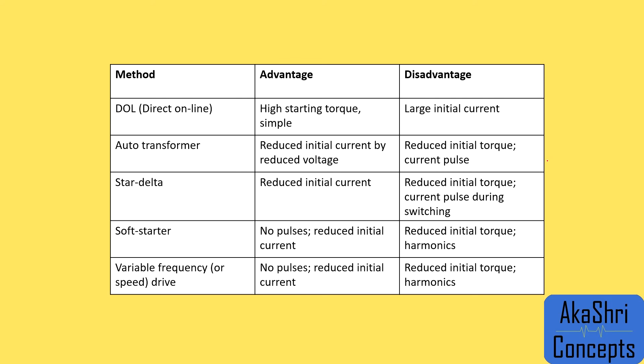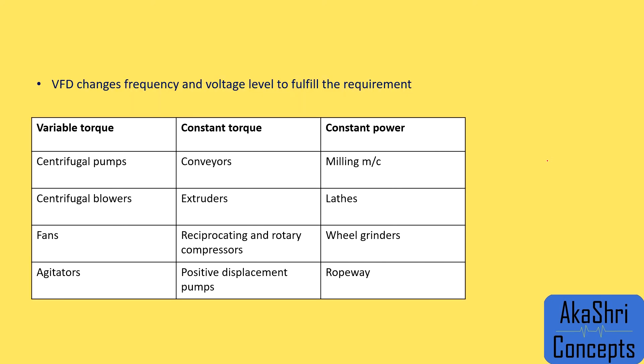The VFD has the same disadvantage of reduced initial torque. Also, in the process of transforming AC to DC and back to AC, harmonics are generated. One key application of VFD is variable torque — for pumps, blowers, fans, and agitators, we require variable torque based on the flow rate or pressure developed. Since power is the product of torque and speed, if torque is varying, power varies accordingly.